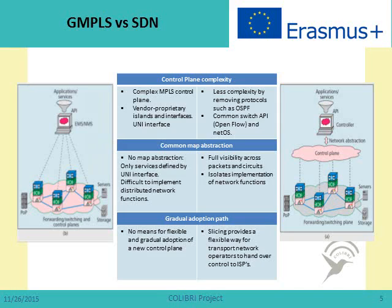Transport networks' control plane has been realized up to now by GMPLS, which was an extension of MPLS — a successful protocol in the internet world. SDN has many advantages and differences compared with GMPLS. The idea of GMPLS required a centralized network management system, and this has been substituted by the SDN controller.